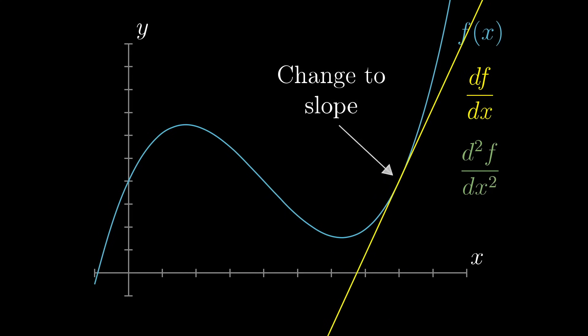The way to see that at a glance is to think about how the graph of f curves. At points where it curves upwards, like this, the slope is increasing, and that means the second derivative is positive. At points where it's curving downwards, the slope is decreasing, so the second derivative is negative.